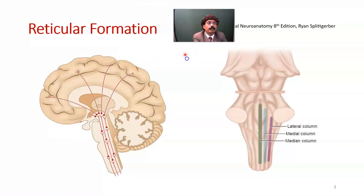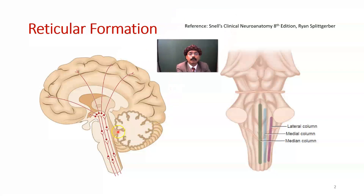If you look at the reticular formation, here is the brainstem — this is the midbrain, this is the pons, this is the medulla oblongata, and here is the reticular formation, made up of neurons and nerve fibers. They form three columns: the lateral column, the medial column, and the median column.